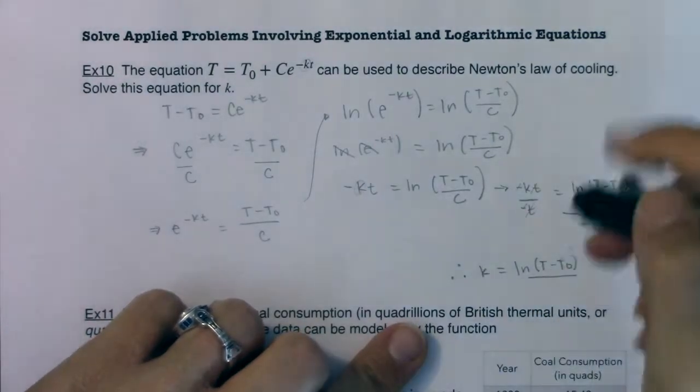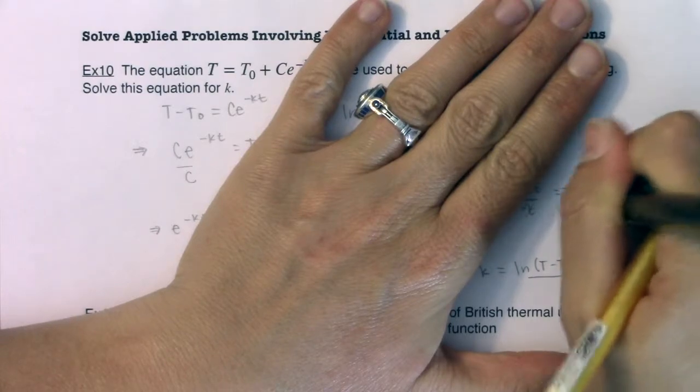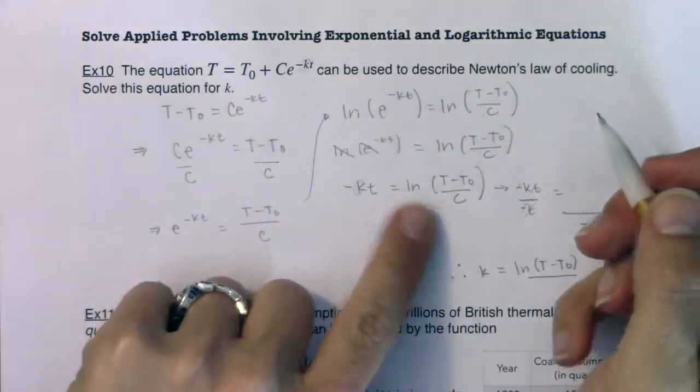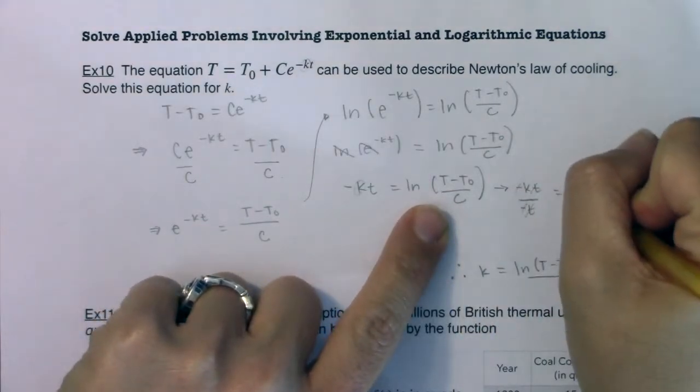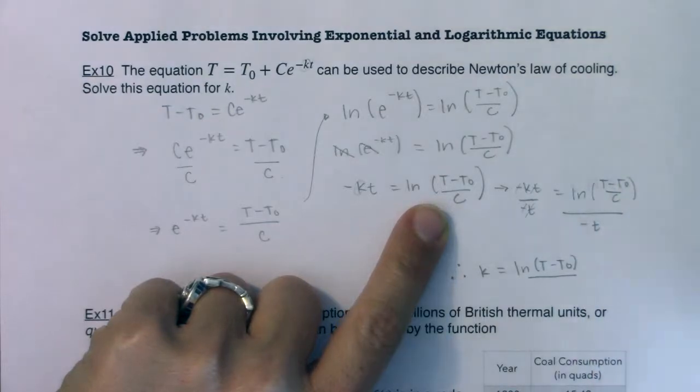Oops. Sorry, I just realized. Let me back this up. I did not put proper parentheses around this term. I have to remember that the C is in my argument. So this was ln of T minus T sub 0 over C. Excuse me for that.